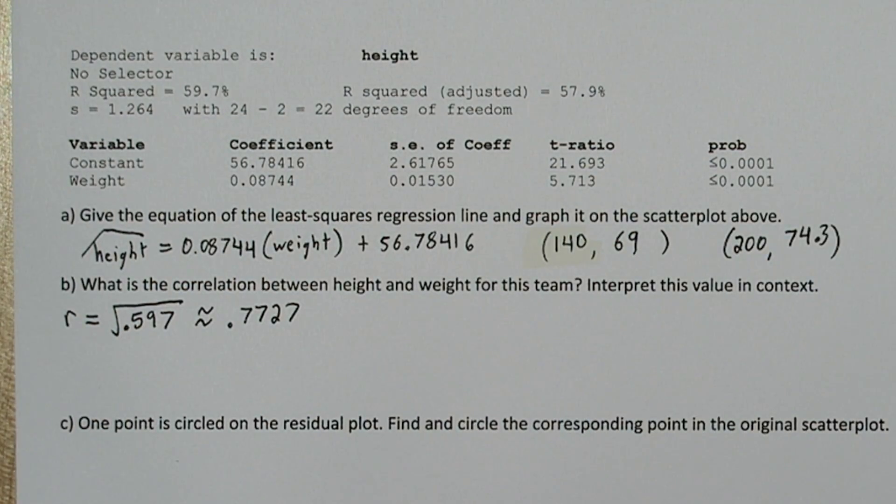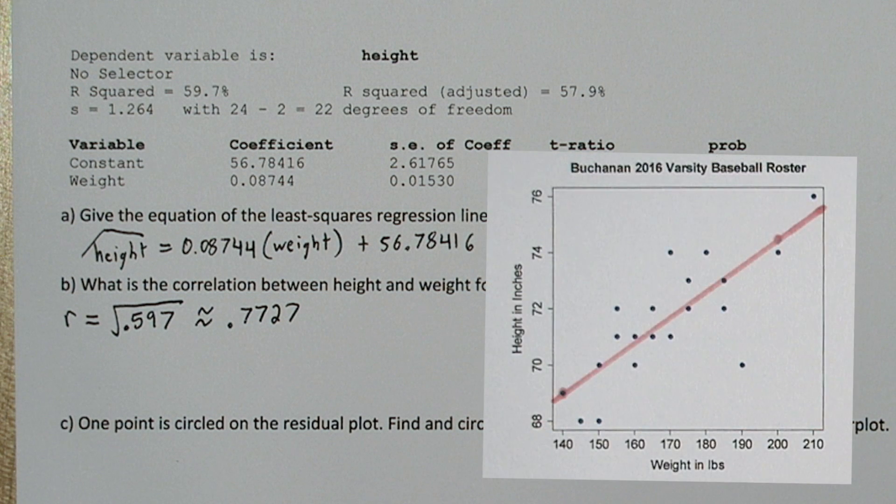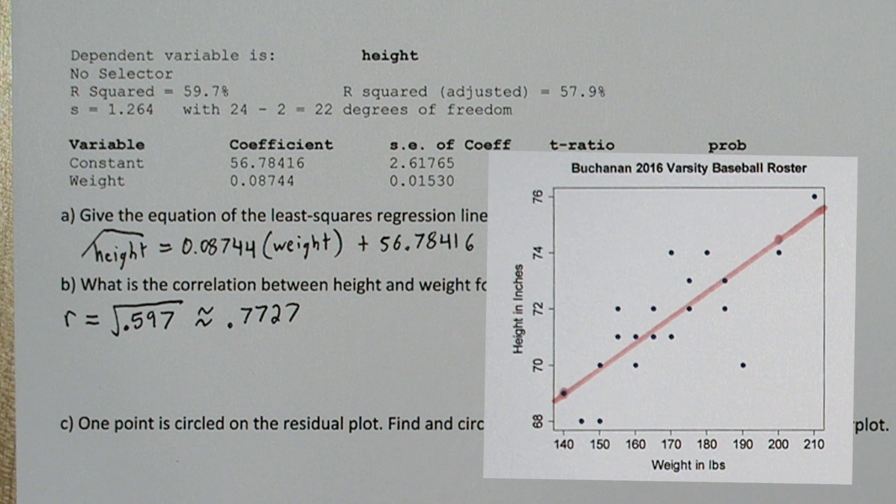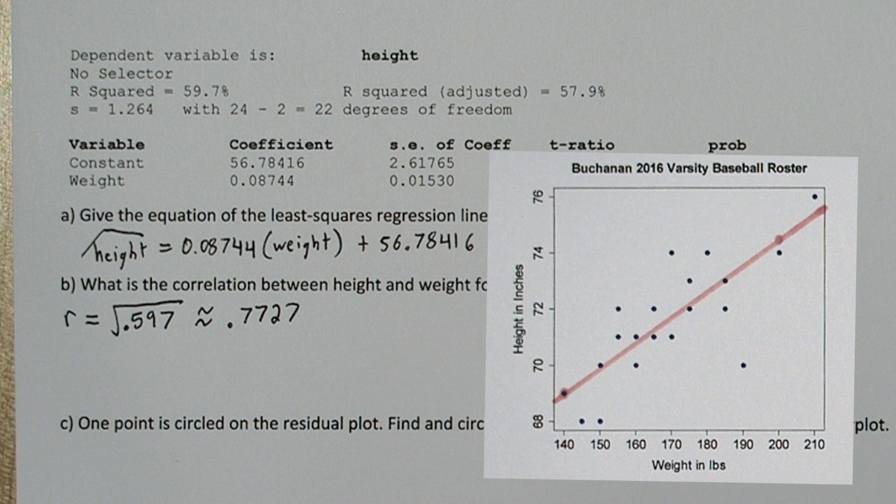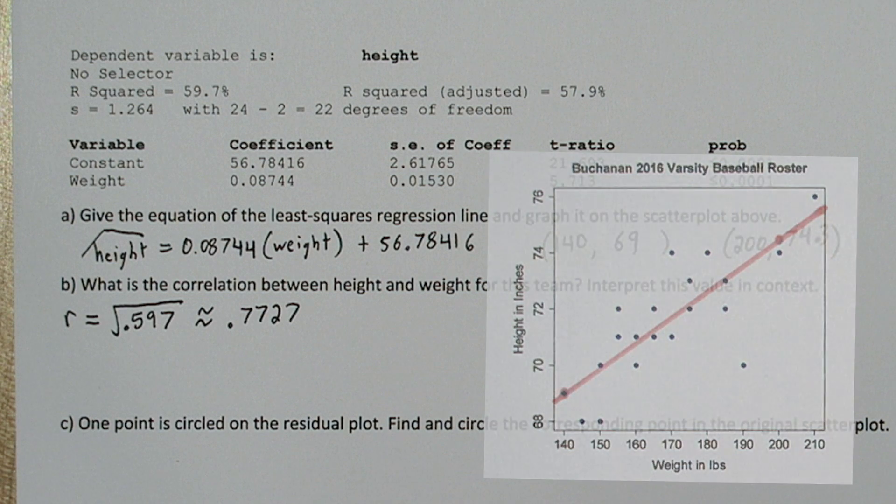Now one word of caution here, when r gets squared, it becomes a positive number. So you need to look at the original scatterplot and determine was the direction negative or positive. Because when we're talking about the correlation, this could have been a negative 0.77, but our scatterplot shows a positive relationship. So we know our correlation is positive 0.7727.